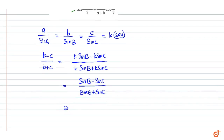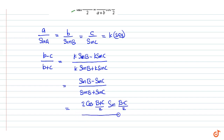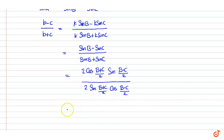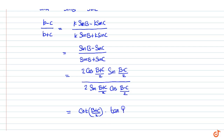Using the half-angle formula, this is equal to 2 cos((B plus C) by 2) into sin((B minus C) by 2) upon 2 sin((B plus C) by 2) into cos((B minus C) by 2), which simplifies to cot((B plus C) by 2) into tan((B minus C) by 2).